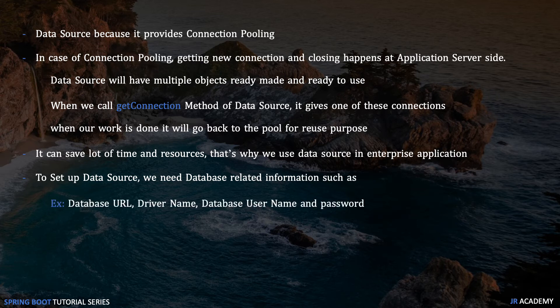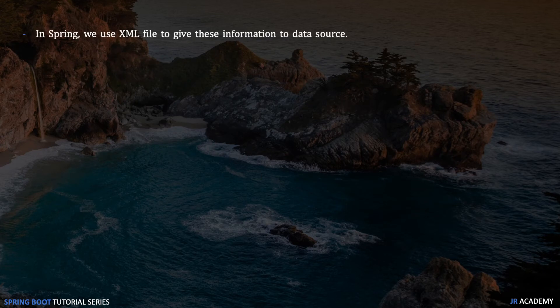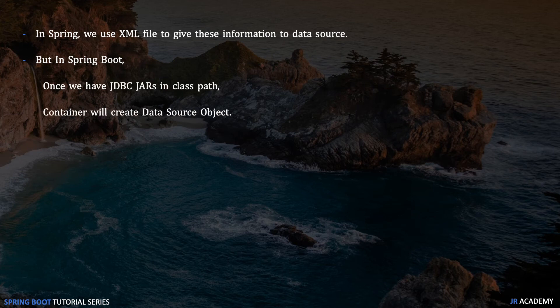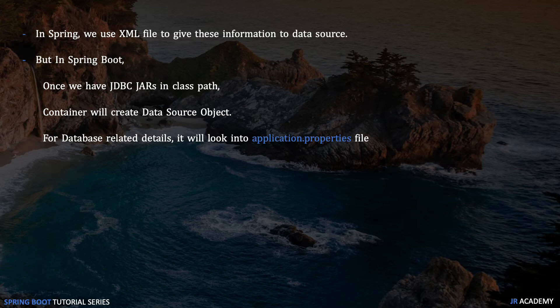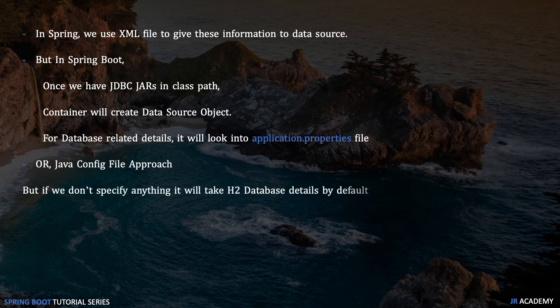To set up DataSource we need a few pieces of information: the database URL, the driver class name, a username, and a password. In Spring you used to provide this via XML, but in Spring Boot there's no XML concept. Once you add the JDBC dependency, at application startup the container scans the project, finds the JDBC jars, and creates a DataSource object via auto-configuration. For database details it looks in application.properties. If nothing is provided, it creates the DataSource with default settings — which are for H2 only.